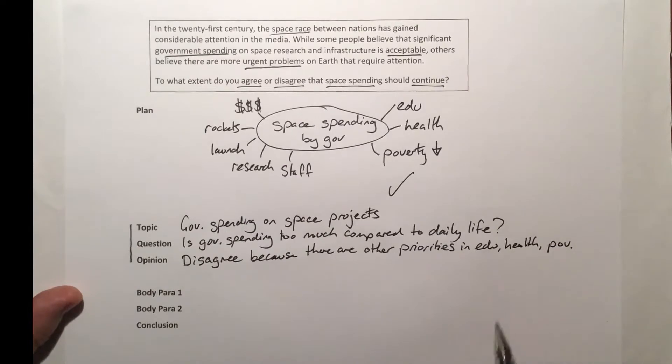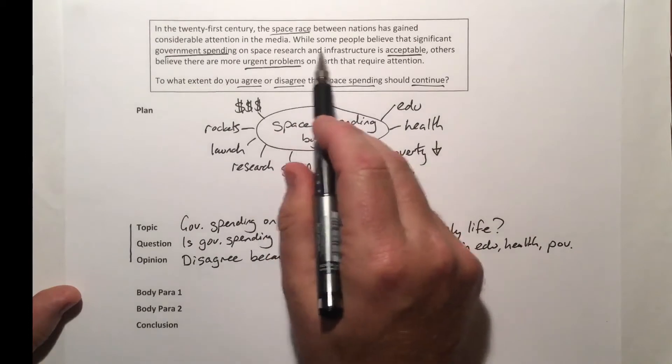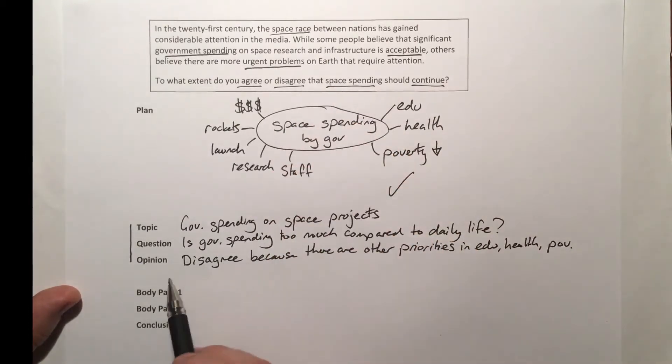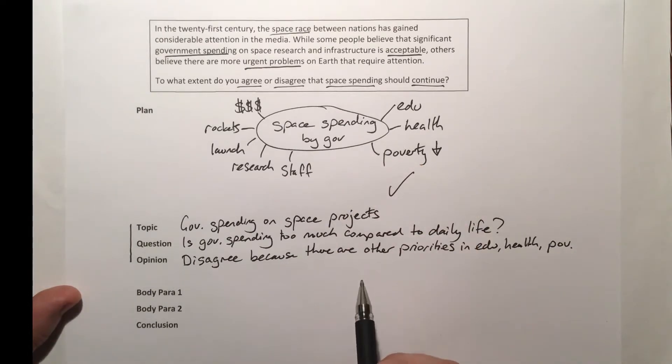I know there are other issues there. I think they're the most important. So this is what my introduction is going to mention—these three things. By doing this in my introduction, I'm making it really clear to the examiner that I know what I'm talking about. I know what the topic is, what the key question is, and I've given an opinion. I've actually answered it really nicely.